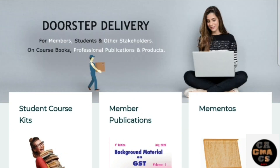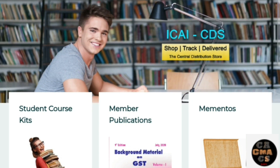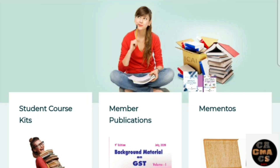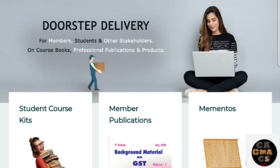Generally, when we register for the CA course — either CA Foundation, Inter, or Final — we get coupons. With these coupons we can order ICAI Books at free of cost. For Foundation, they will get one coupon at the time of registration. For Inter and Final students, they get two coupons at the time of registration.